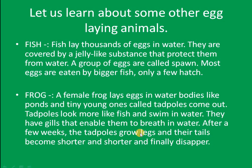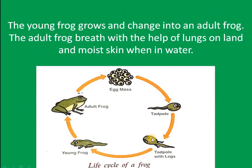After a few weeks, the tadpole grows legs and its tail becomes shorter and shorter and finally disappears. The young frog then grows and changes into an adult frog.